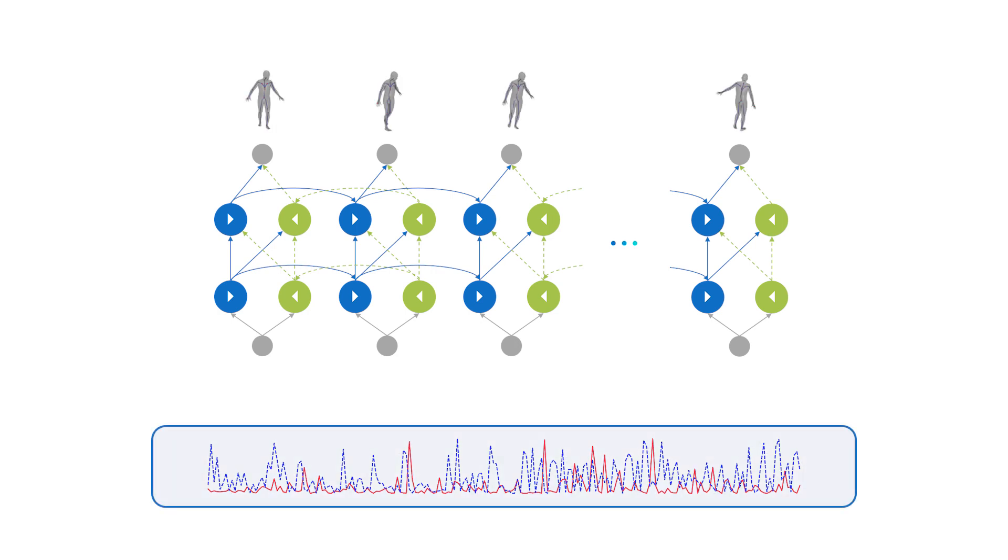In offline mode, the network has access to the whole sequence resulting in high quality but at the cost of offline processing.